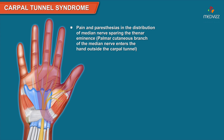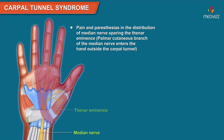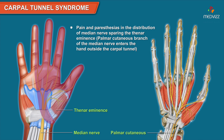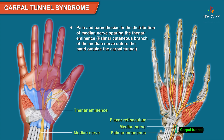Patients complain of pain and paresthesias in the distribution of the median nerve, sparing the thenar eminence, as the palmar cutaneous branch of the median nerve enters the hand outside of the carpal tunnel.